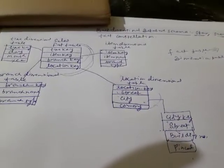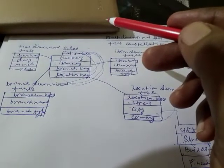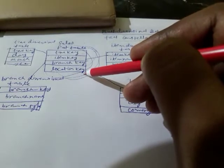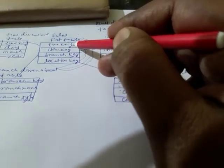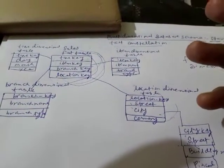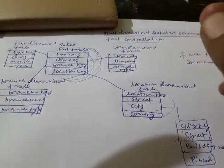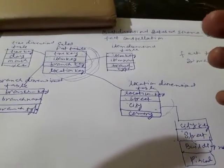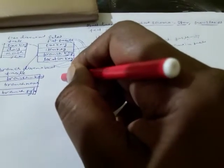Now, what is the fact constellation? It may be possible that you want to keep another fact table. For example, if you want to search only a particular value like branch key, you may find it efficient to have a separate fact table for that. Think about a bank — when opening an account, there is a lot of data, but mainly we search customer ID, customer name, and balance detail, though other attributes are also there when required.